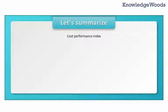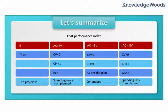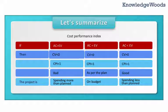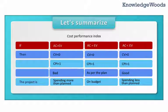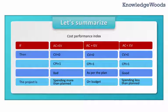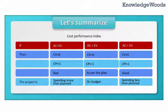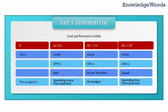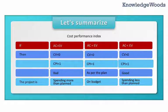Let's summarize the Cost Performance Index. There could be three situations. If actual cost is greater than earned value, cost variance is negative and CPI is less than 1 — a bad situation meaning the project is spending more than planned. If actual cost equals earned value, cost variance is 0 and CPI equals 1, meaning the project is on budget. If actual cost is less than earned value, cost variance is positive and CPI is greater than 1 — a good situation where the project is spending less than planned.